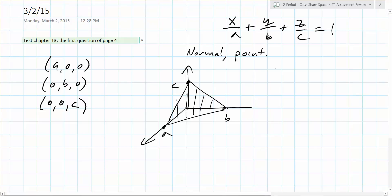So what point do you want to use? Just pick one of them. The first one. So our point is going to be (a,0,0). We need to get a normal vector. How can we construct a normal vector to this plane? Cross product of any two vectors that are on the plane, right?